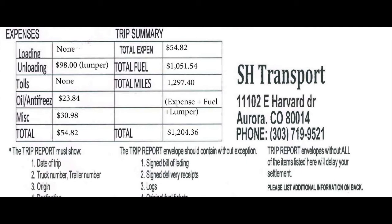Take the same total and write it in the total expense area just above the total fuel area. In the total fuel area, write down the total amount of money spent on fuel. In the total miles section, write down the total amount of miles driven for the load. Please keep in mind, total miles just reflect what's supposed to be on the odometer and will not reflect your settlement miles. Towards the very bottom, to calculate the total, add the total expense and the total fuel amounts, and also add the lumper expense if there was a lumper for this load. This will then complete the third section of the driver trip report envelope.